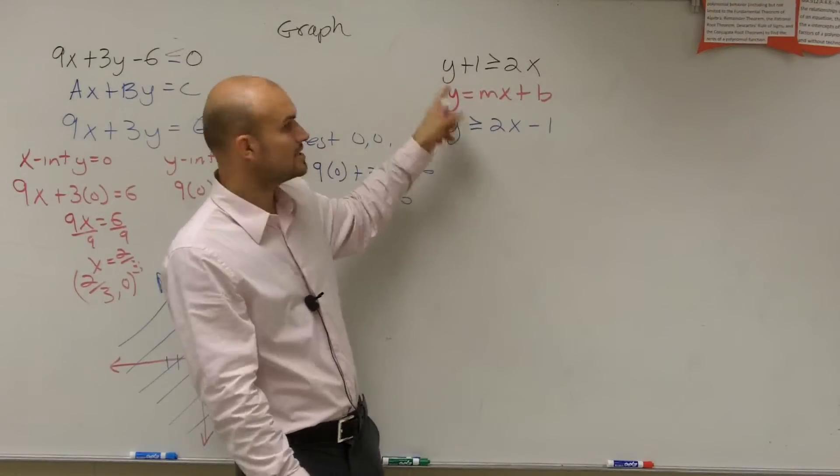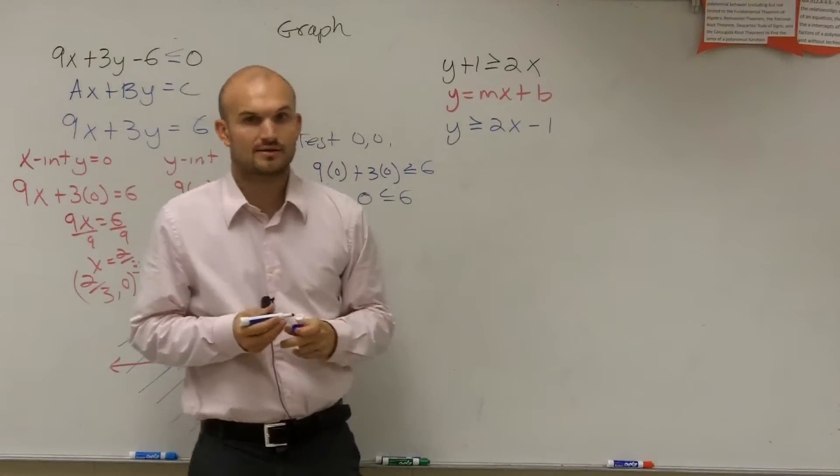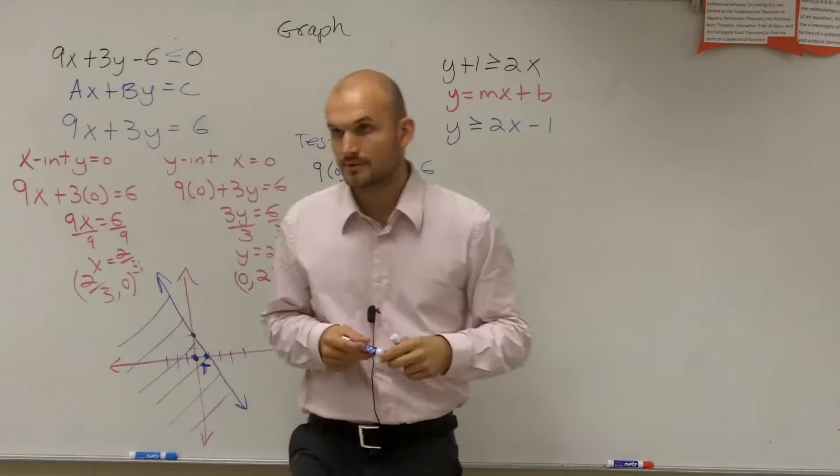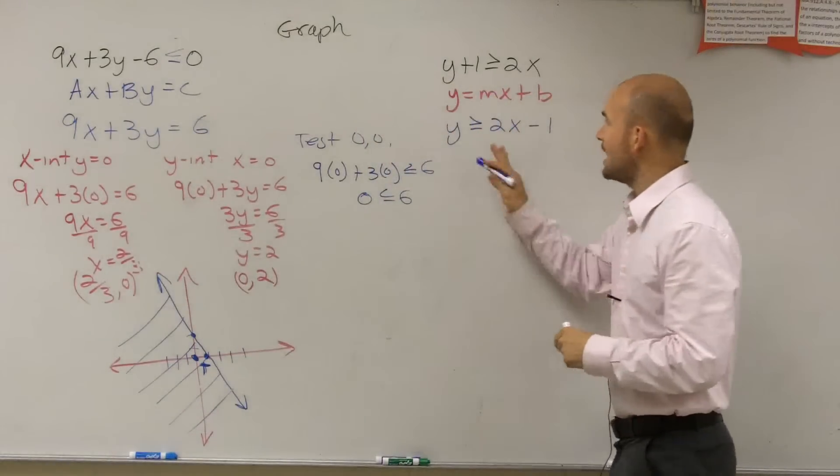To do this, you have to get the y by itself. So you subtract the 1 to the other side. Follow me? Okay. So now, how do I graph it when it's in that form?